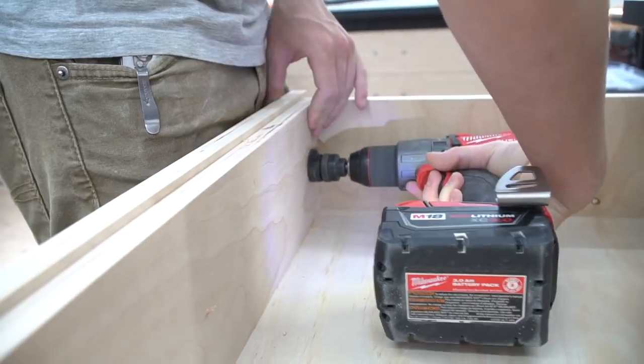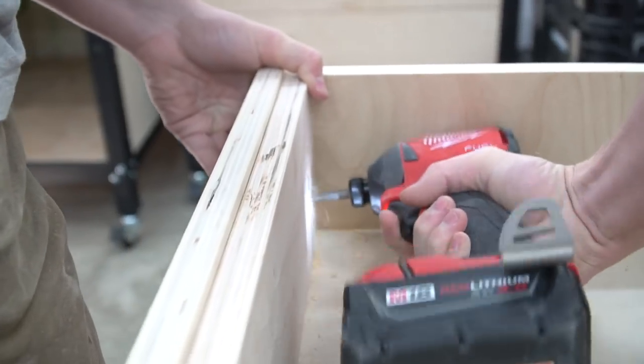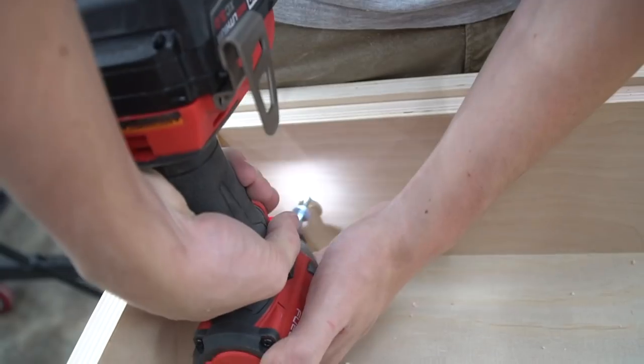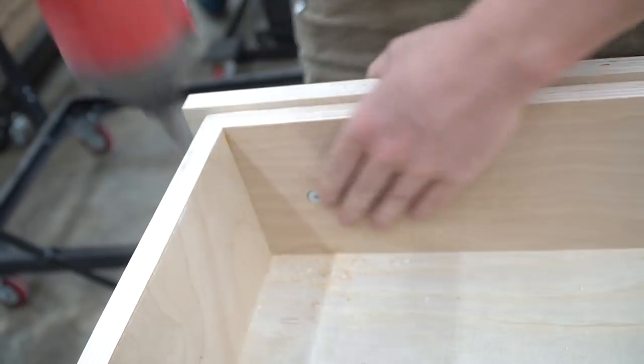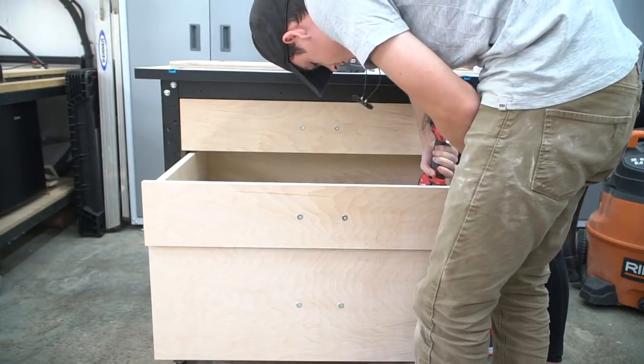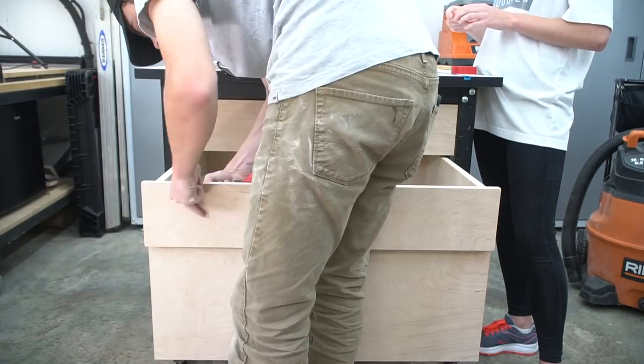Once you screw the drawer front in place, you can open the drawer and attach the drawer front from inside before removing the screws that are in the drawer pull holes. Repeat this on all the drawers, making sure you keep the grain direction the same.